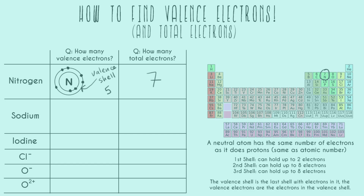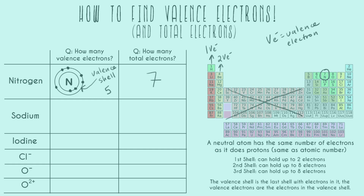Now let's talk about the valence electron trend, because the periodic table's shape is trying to show you how many valence electrons every element has — it just goes in order of columns. Everything in the first column has one valence electron, and everything in the second column has two valence electrons. Now we've gotten to the metals, and I'm going to put an X through all of the transition metals because you cannot predict their valence electrons based just on the periodic table shape.